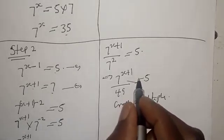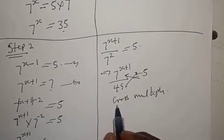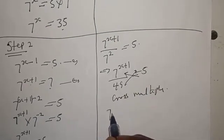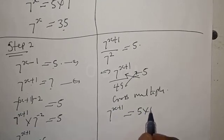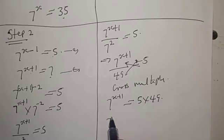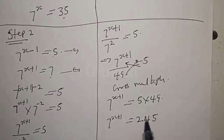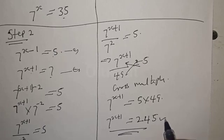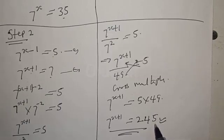Cross multiplying, this multiplied by this gives us: 7 raised to power x plus 1 is equal to 5 times 49, which is 245. Therefore 7 raised to power x plus 1 is equal to 245. Please don't forget to like, share, comment, and subscribe for more new videos. Thanks for watching!